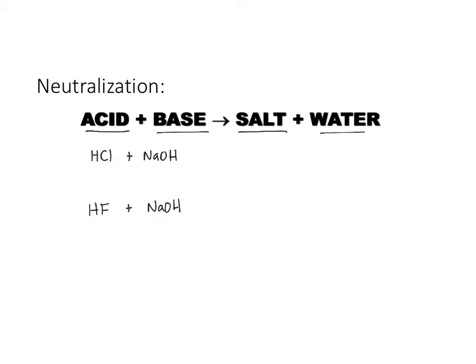We have two sets of acids and bases here. In example one, we have HCl, which is a strong acid, and NaOH, which is a strong base. When the HCl and NaOH come together, the H+ from the HCl is going to combine with the OH- from the hydroxide, and you're going to end up with H2O. The remaining sodium and chloride ions are going to form your NaCl salt.